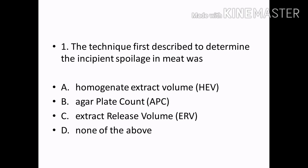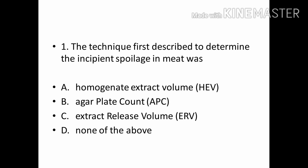The technique first described to determine the incipient spoilage in meat was: Options — Homogenate extract volume, agar plate count, extract release volume, and none of the above. Correct answer: Option C — Extract release volume.